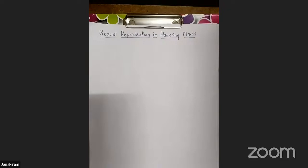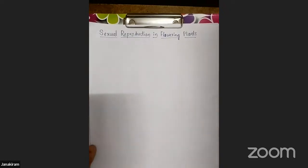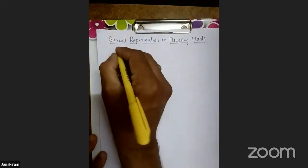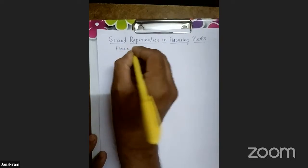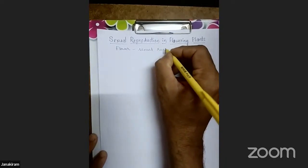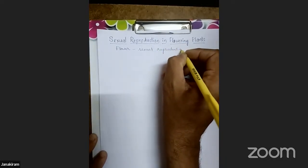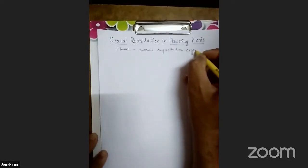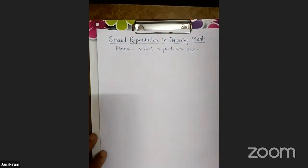In earlier classes, we discussed morphology and fruit formation. So here, what is sexual reproduction? Sexual reproduction means the fusion of male and female gametes leading to the formation of a zygote. The sexual reproductive organs are the flower. The sexual reproductive structure or organ present in the plant is a flower.